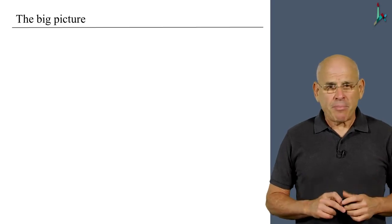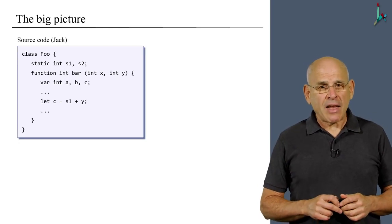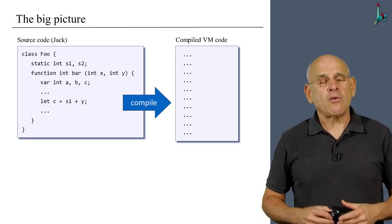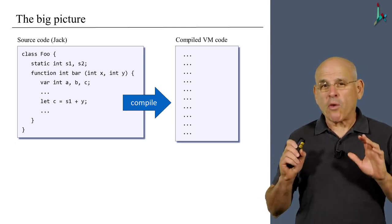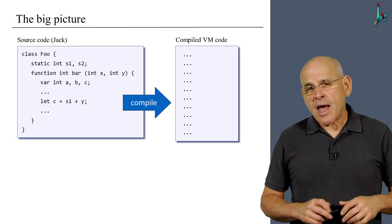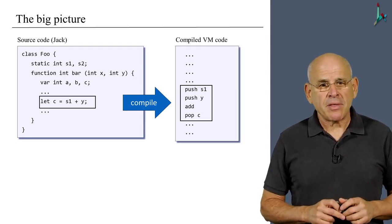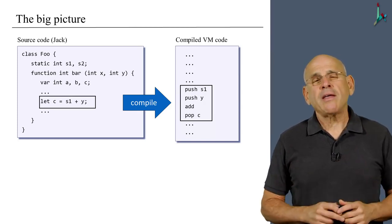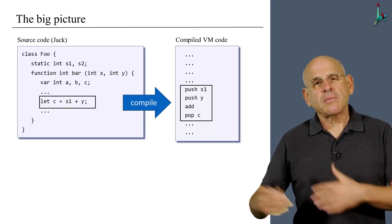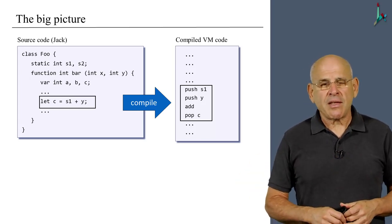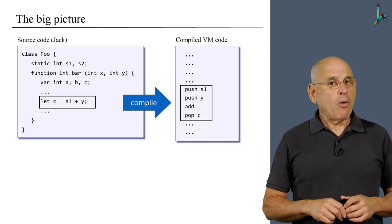Let's start with the big picture. We have this arbitrary example of a high-level piece of code and we want to translate it, or compile it, into VM code — something that we'll worry about later on in the course. Now let's focus on this statement as an example: 'let c equals s1 plus y.' The compiler will translate it into: push s1, push y, add, and pop c.